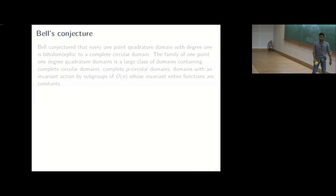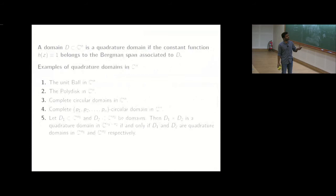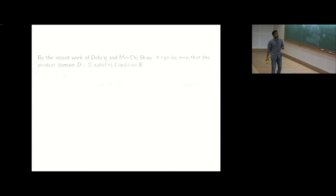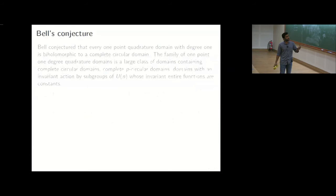So of course we have already seen that both the ball and the polydisk are 1.1 degree quadrature domain, so that cannot be a statement which we can make here. But then Bell made a conjecture that they will all be biholomorphic to a complete circular domain. So 1.1 degree quadrature domains, I have already written down a few examples that are more. So the first four actually are examples of 1.1 degree quadrature domains and there are more actually, so this is a class...